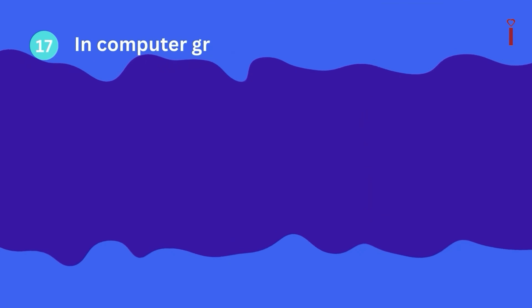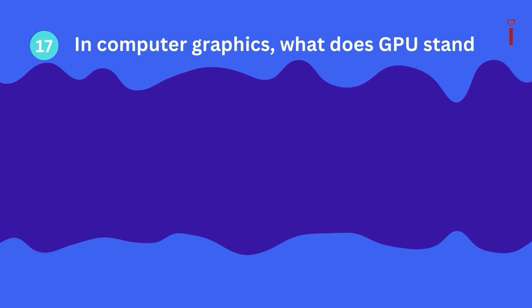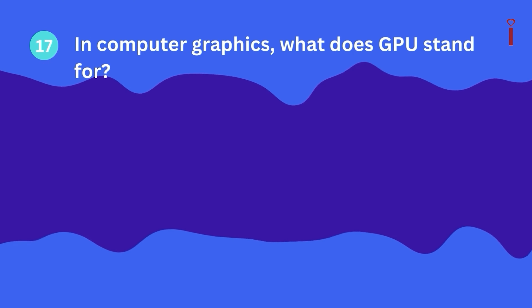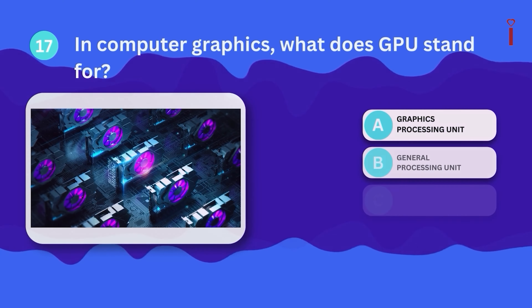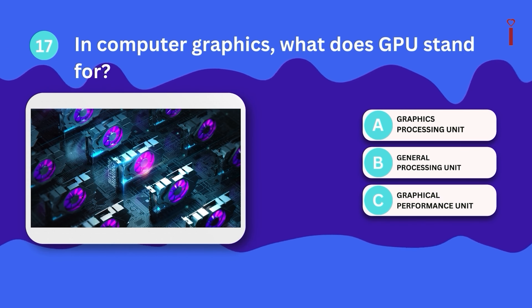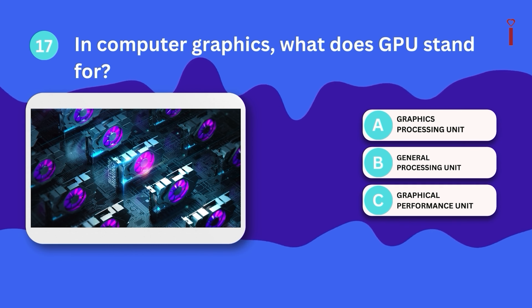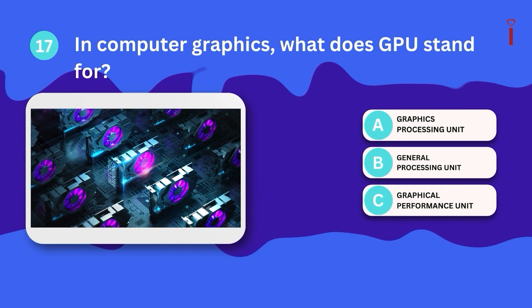Question 17: In computer graphics, what does GPU stand for? A. Graphics processing unit, B. General processing unit, C. Graphical performance unit.